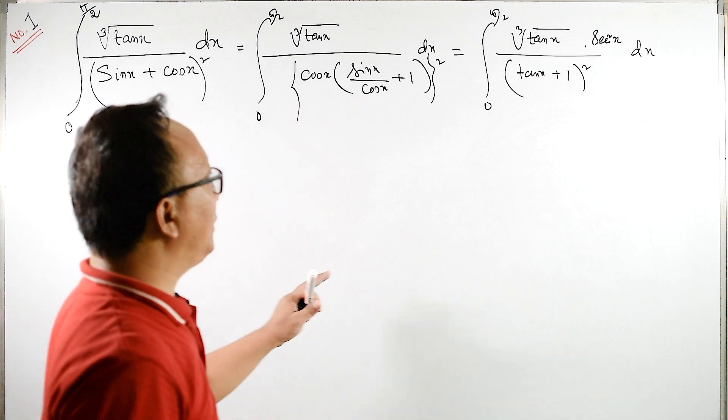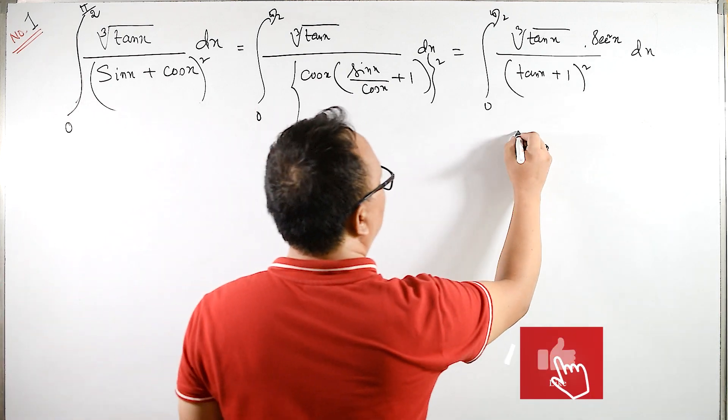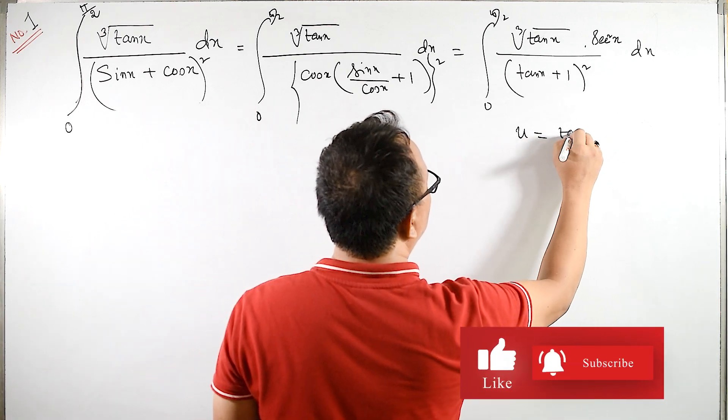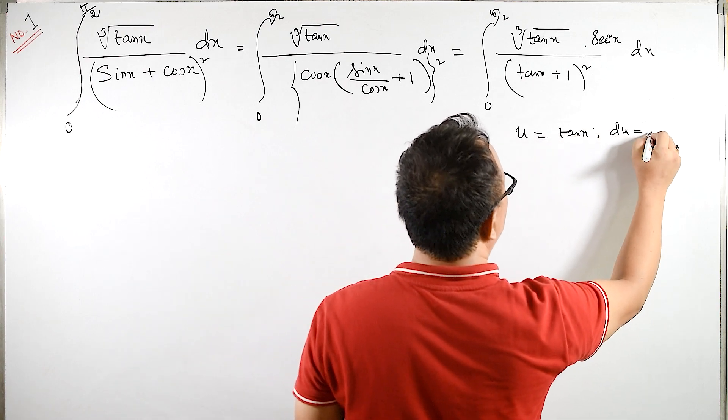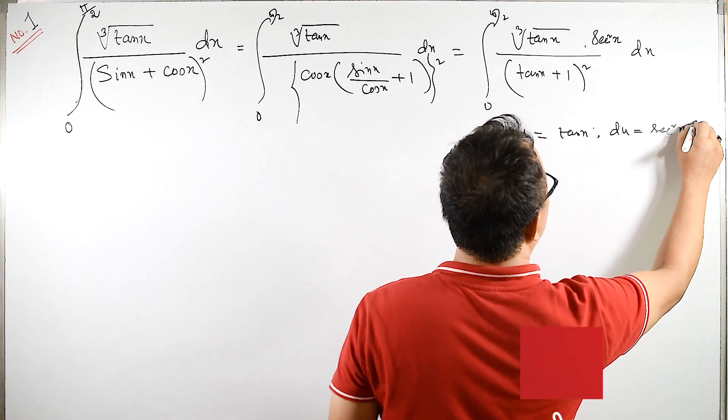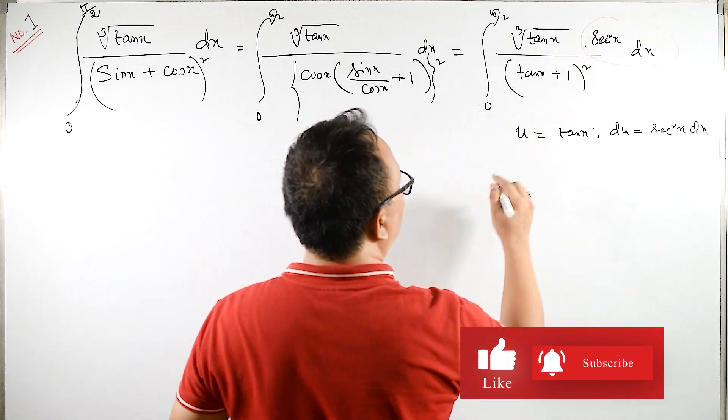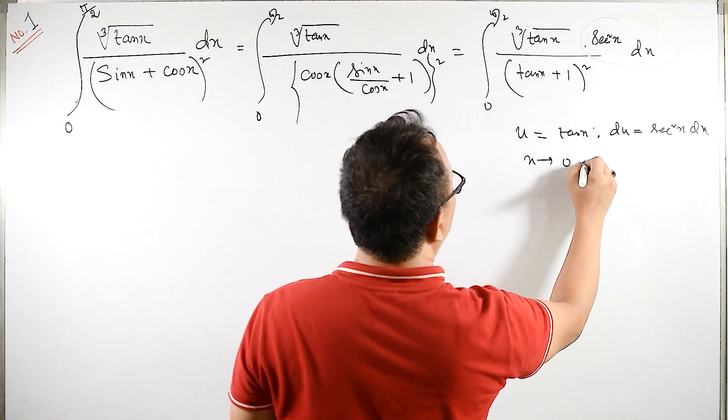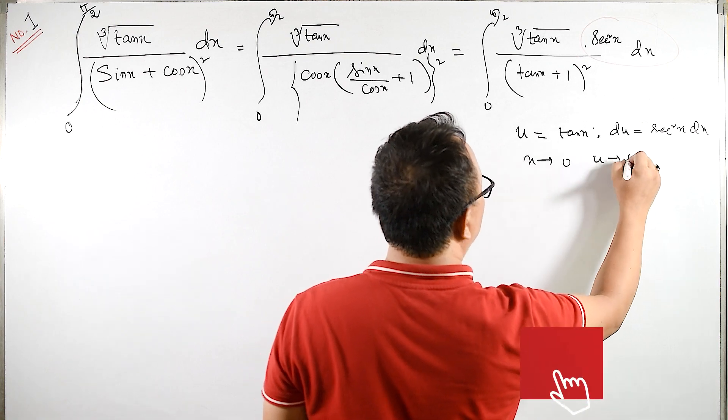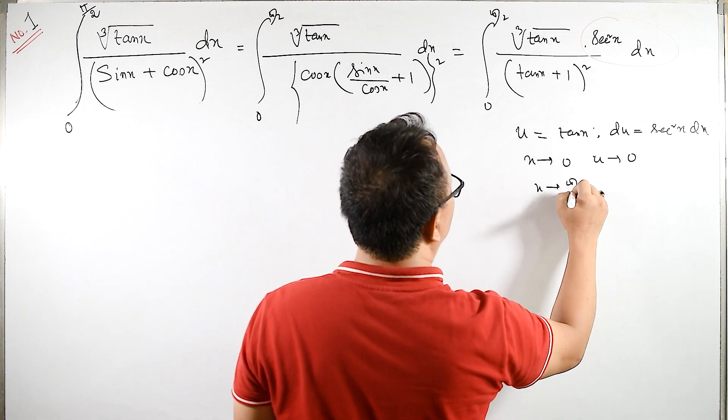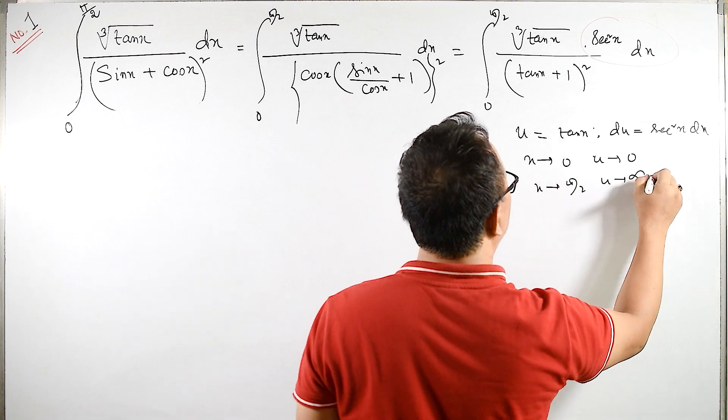So, let us substitute u equals to tan x. Then my du equals to sec square x dx. So these we have for the limits: when x tends to 0, then u tends to tan 0 is 0. When x tends to pi by 2, u tends to tan pi by 2 is infinity.